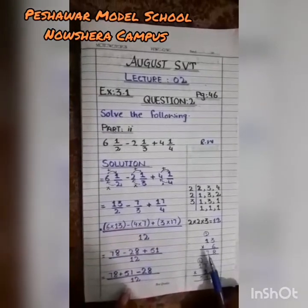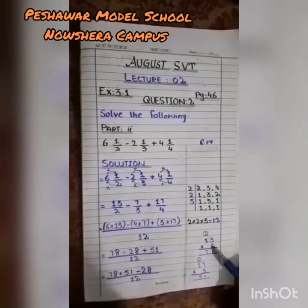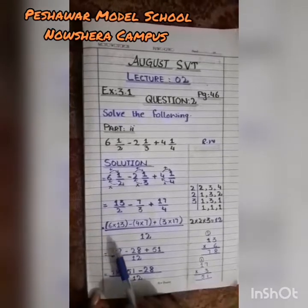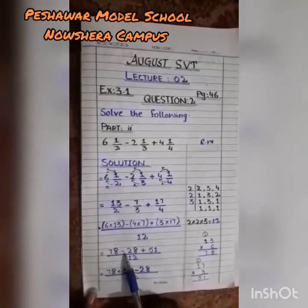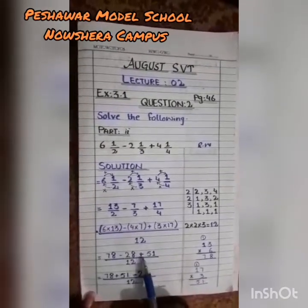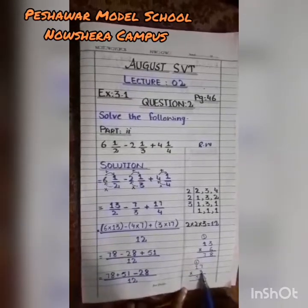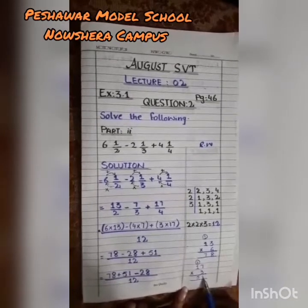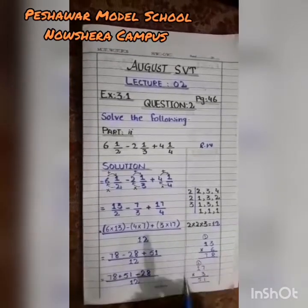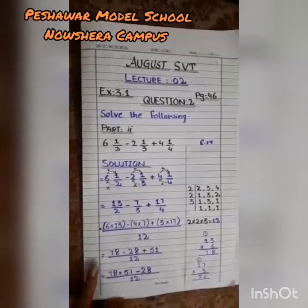Now multiply: 6 × 13 — six threes are 18, write 8 carry 1; six ones are 6 plus 1 carry = 7 — so 6 × 13 = 78. Minus: 4 × 7 = 28. Plus: 3 × 17 — three sevens are 21, write 1 carry 2; three ones are 3 plus 2 carry = 5 — so 3 × 17 = 51.